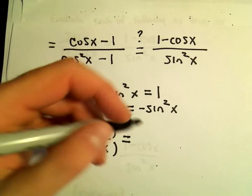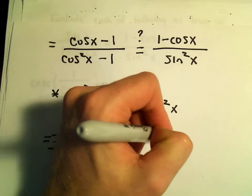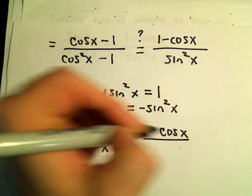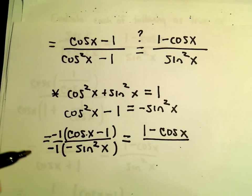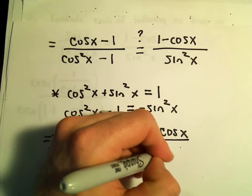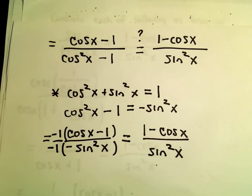And that's going to give us -cos(x) + 1. So -cos(x) + 1, we can rewrite that as 1 - cos(x). And then our negatives would cancel out in the denominator. We would be left with sin²(x).